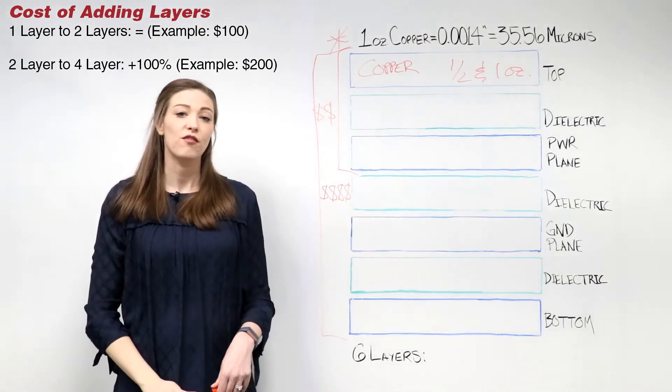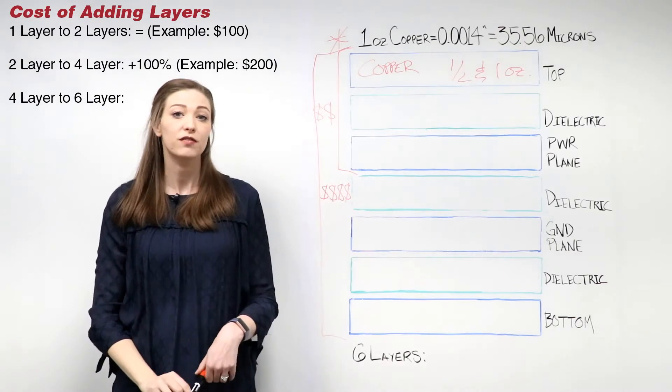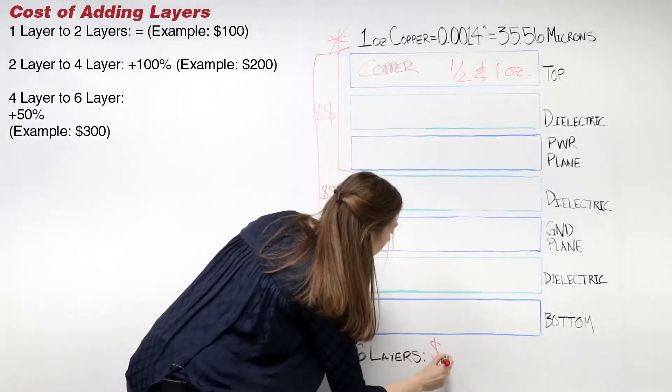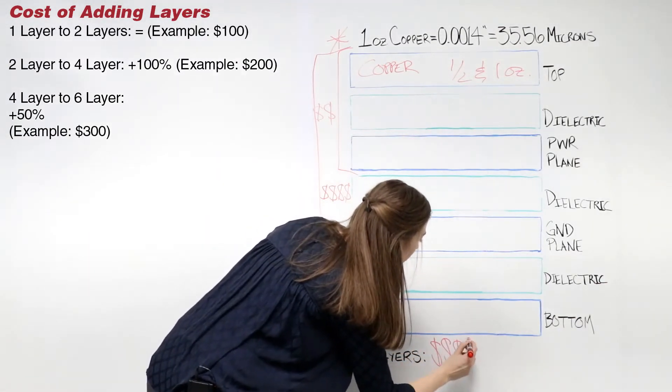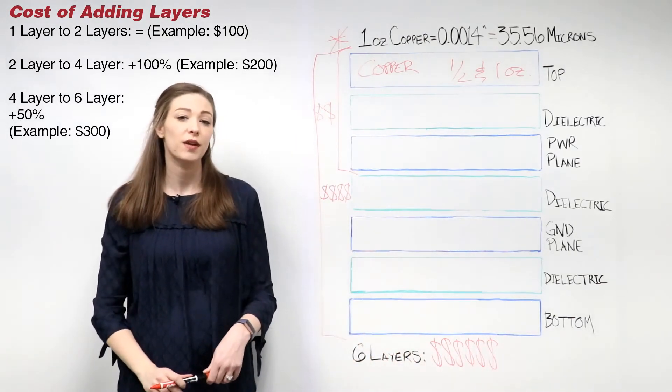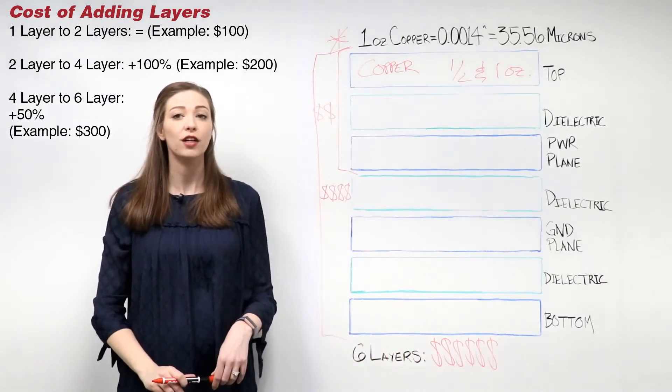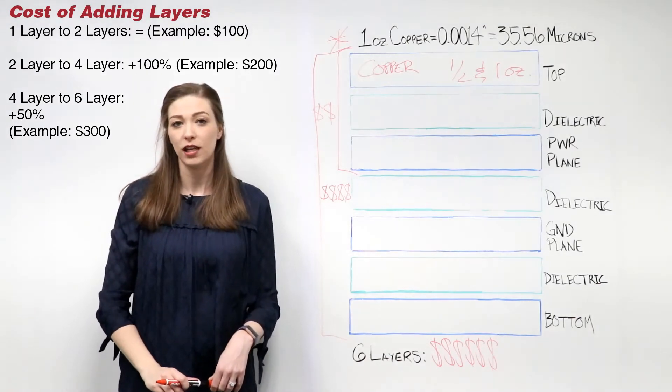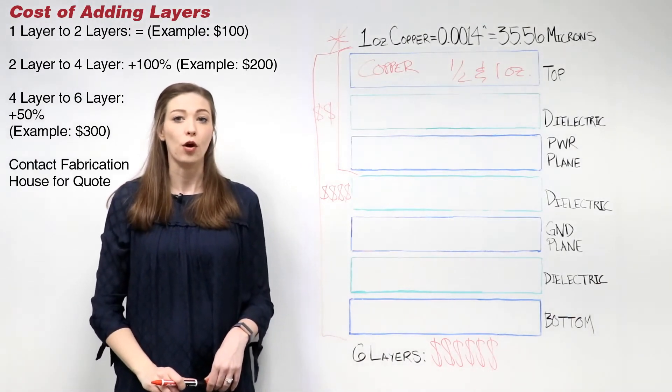The additional cost of going from a four layer board to a six layer board is 50%. This can be used to estimate additional costs, but for more accurate amounts, especially on multi-layer boards, contact your fabrication house for a quote.